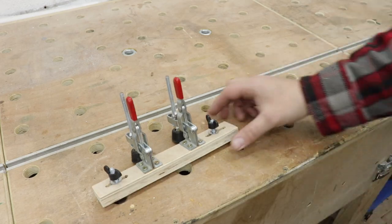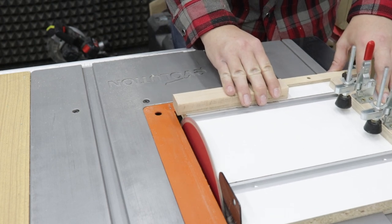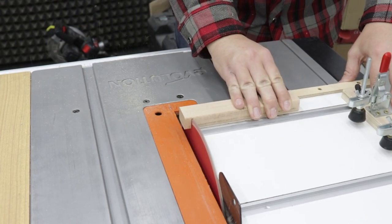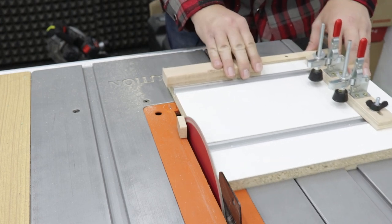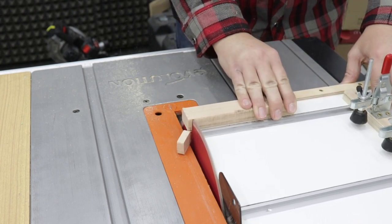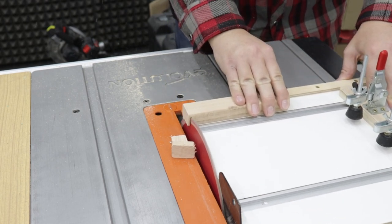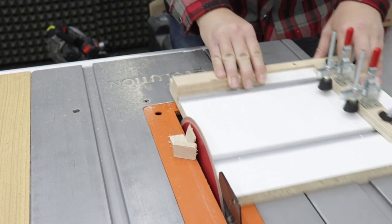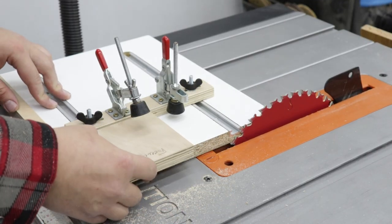And let's test our jig. This sled is absolutely perfect for cutting smaller pieces on your table saw. With the toggle clamps you can secure your workpiece.